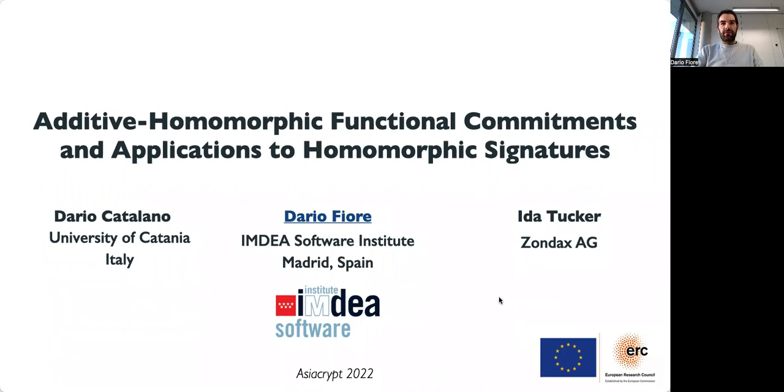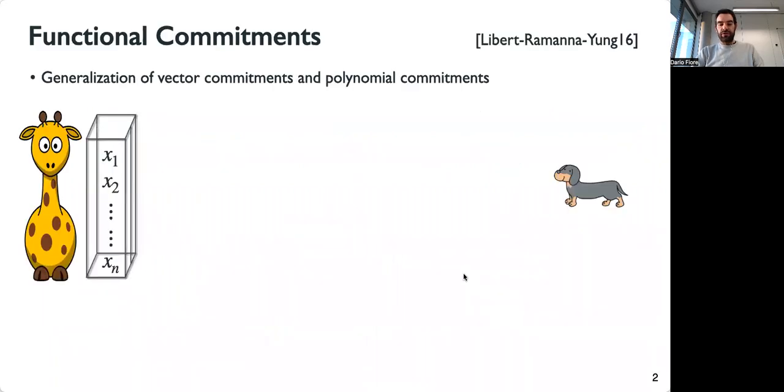This is about functional commitments, a notion proposed in 2016 by Libert, Ramanna and Yung. It was proposed as a generalization of the more popular notions of vector commitments and polynomial commitments.